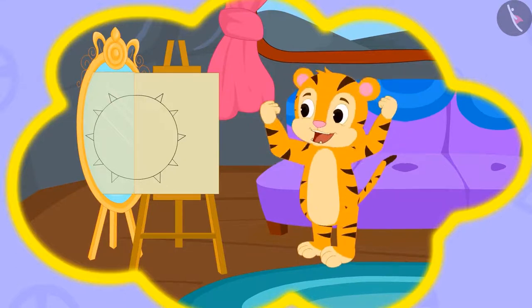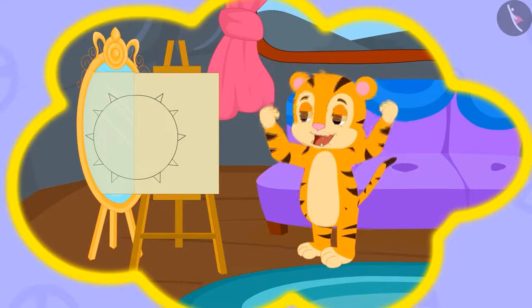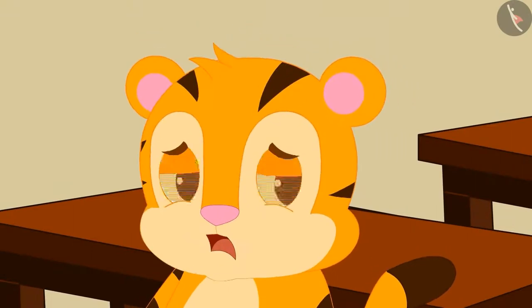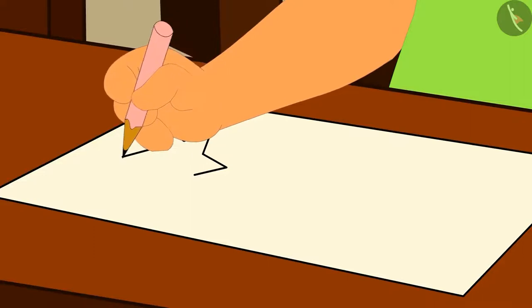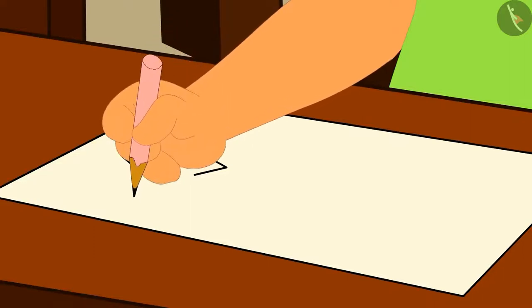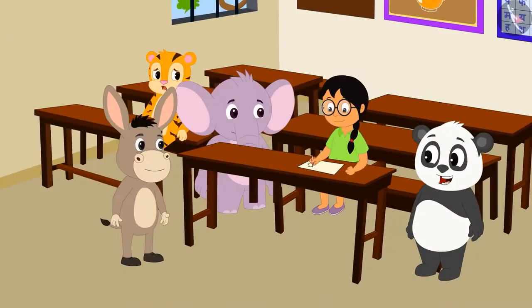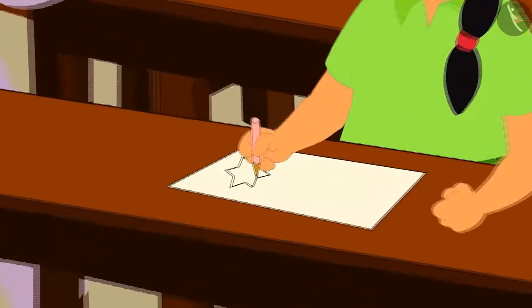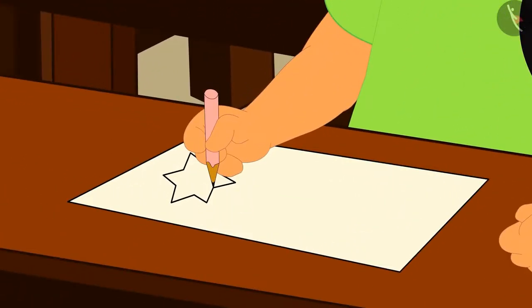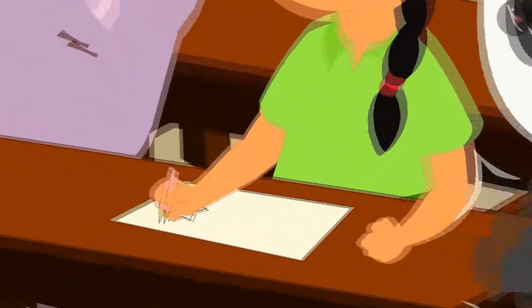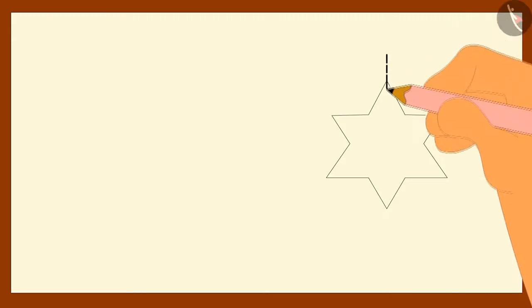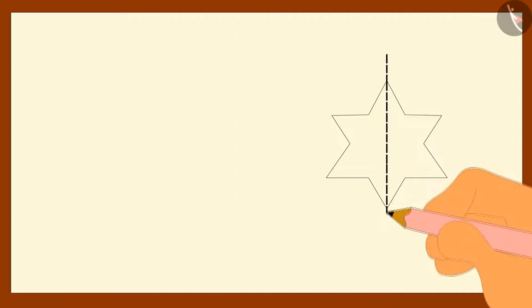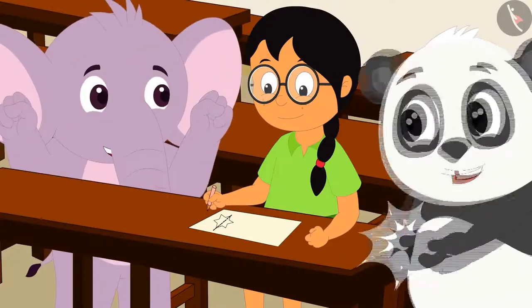Shere Khan became very popular because of his magical mirror. But one day, he noticed that there is a huge crowd around Minu in the classroom. Minu is telling children with the image of a star in her hand: I will draw a dotted line on the image and it will divide the image into similar parts. She draws a line on the image, and the children shout with excitement: This magic is better than Shere Khan's magical mirror!